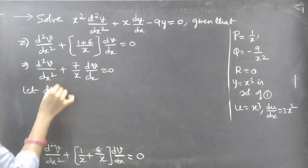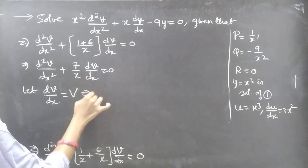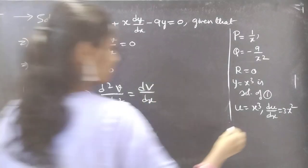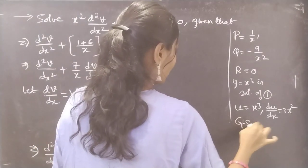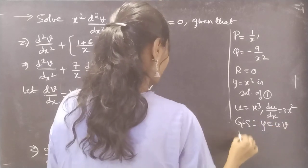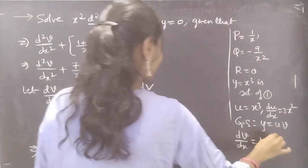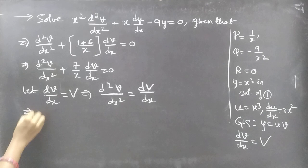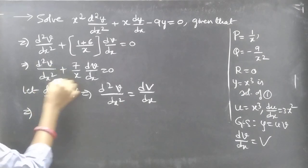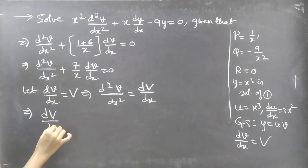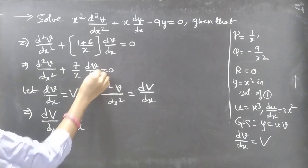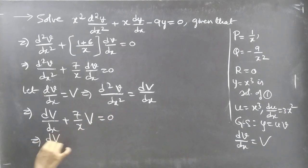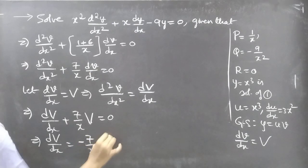Let dv/dx = V, so d²v/dx² = dV/dx. Substituting into the equation: dV/dx + (7/x)V = 0, which we can write as dV/dx = −(7/x)V.